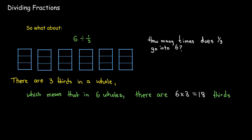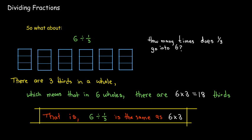So, in other words, 6 divided by 1 third is the same as taking 6 times the reciprocal, and the reciprocal of 1 third is 3 over 1.